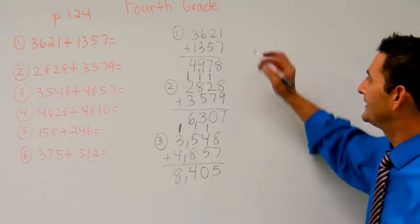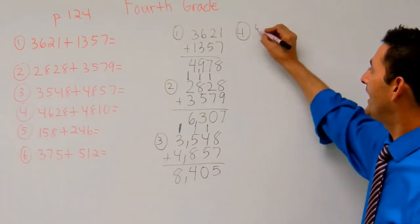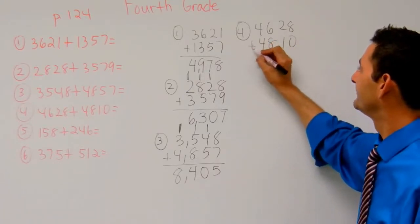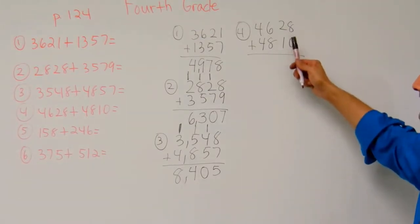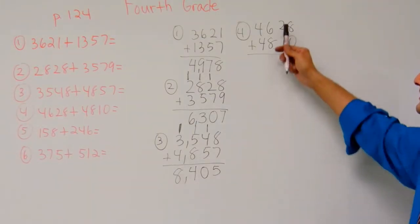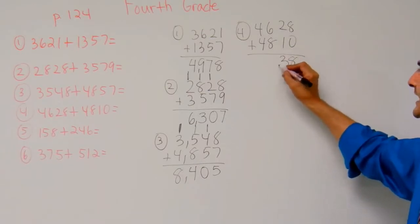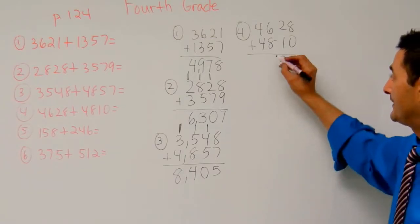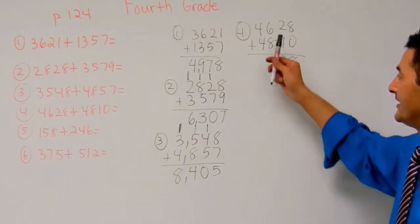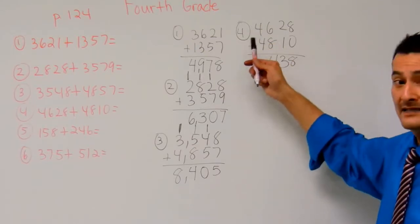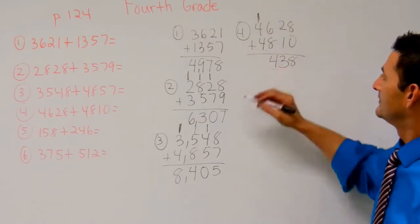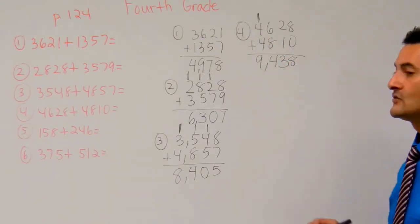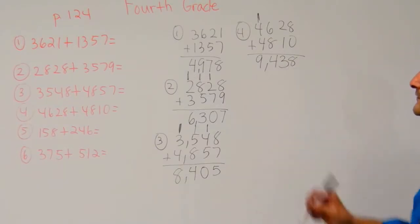Now let's take a look at number 4. Number 4: I have 4,628 plus 4,810. Let's go ahead and add the 1's place: 8 plus 0, that's 8 1's. Now the 10's place: 2 plus 1, that's 3 10's. Now the 100's place: 6 plus 8, that's 14 100's. I'm going to keep 4 of those 100's there and move 10 of those 100's over here — 10 100's is 1,000. 4,000 plus 4,000 plus 1,000 is going to be 9,000. So the answer is going to be 9,438.